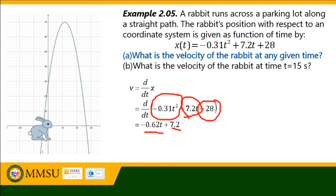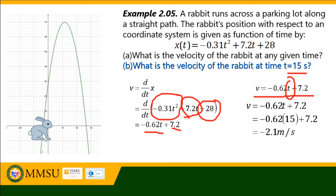Therefore, the instantaneous velocity of the rabbit at any given time is: v(t) = negative 0.62t plus 7.2. For the velocity at t equals 15 seconds, we substitute t = 15 into the derived equation. The result is: v = negative 0.62(15) plus 7.2, which gives a final value of negative 2.1 meters per second.